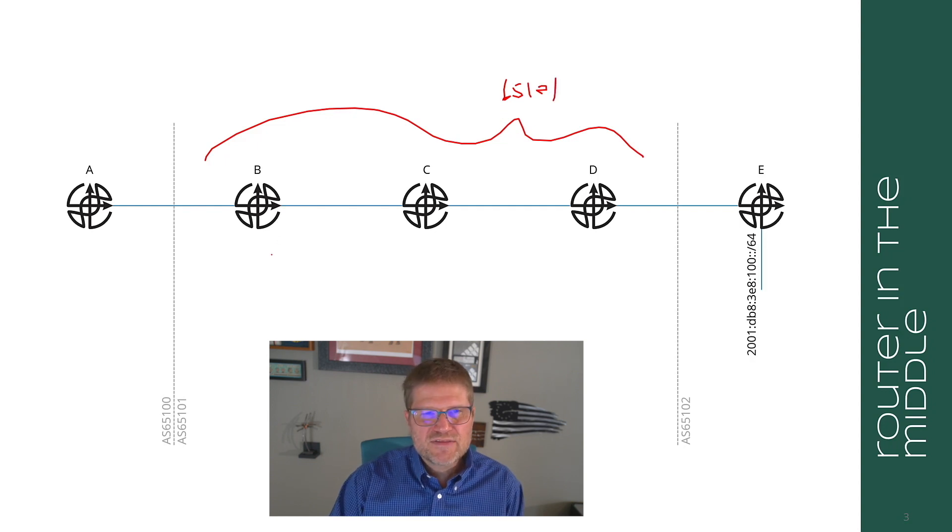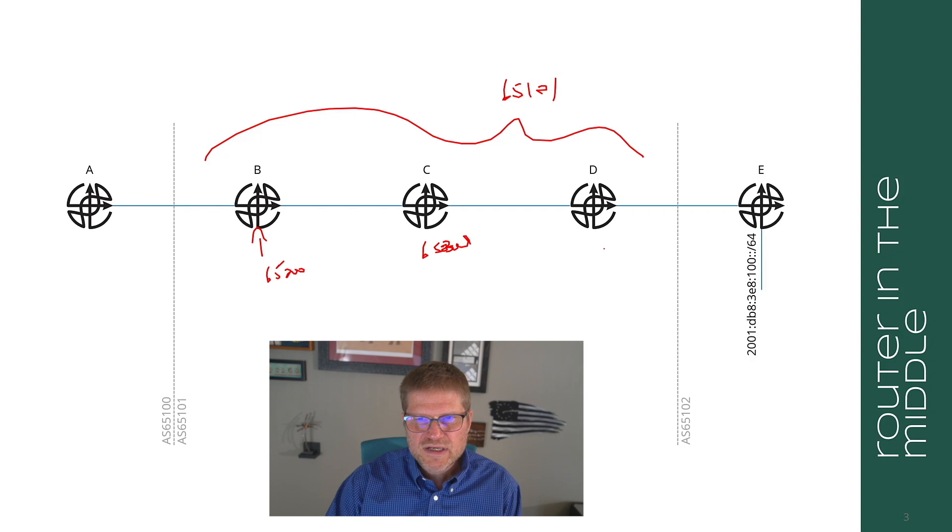Now this router could actually be placed in a separate AS and it would be called AS say 65200, and then this one would be in say 65201, and say this one is in 65202.